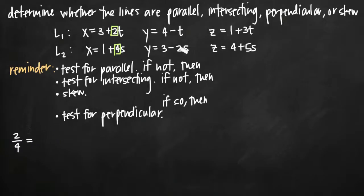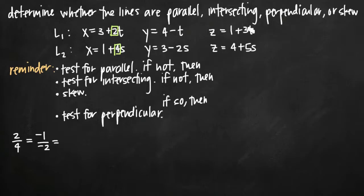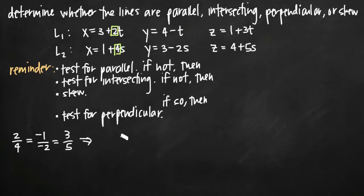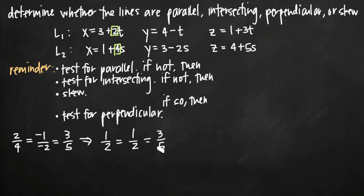We set 2 over 4 equal to the ratio of the coefficients in our y equations. In front of t we have negative 1, and in front of s we have negative 2, so we write negative 1 divided by negative 2. Then we set that equal to the coefficients from the z equations, which are 3 and 5, giving us 3 over 5. If this equation is true, the lines are parallel. Simplifying: 2 over 4 is 1/2, negative 1 over negative 2 is 1/2, but 3 over 5 does not equal 1/2. So L sub 1 and L sub 2 are not parallel.